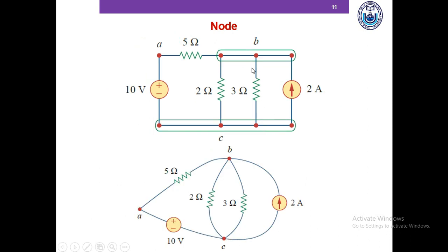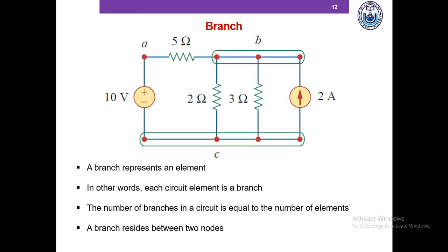To further illustrate this point, I have removed the short circuits or wires to show that point B is basically one point. Similarly, removing the wires connecting the four points shows this is basically one point or one node. The main message is: if several nodes are connected by short circuits, we do not consider them as separate nodes — we consider them as the same node. Now, what is a branch in a circuit? A branch is basically an element — each circuit element is a branch. Therefore, the number of branches in a circuit equals the number of elements. A branch resides between two nodes. In this circuit, for instance, there are five branches.